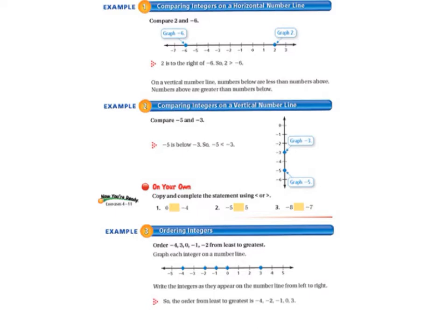Example 1: comparing integers on a horizontal number line. We're going to compare 2 and negative 6. So 2 is to the right of negative 6, so 2 is greater than negative 6. On a horizontal number line, numbers to the right are greater than numbers to the left.